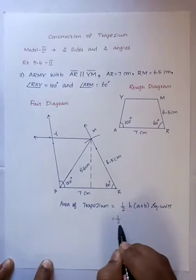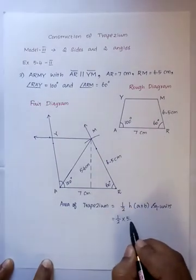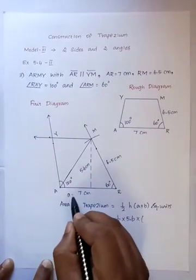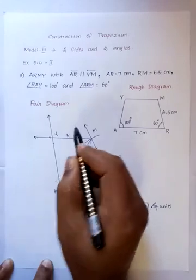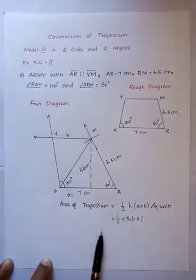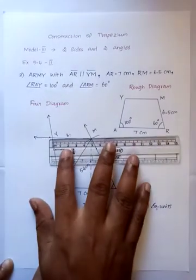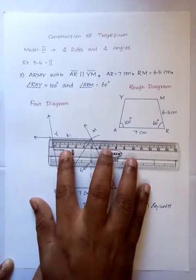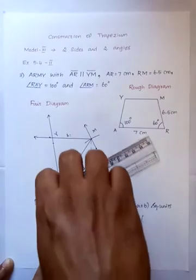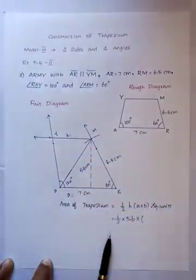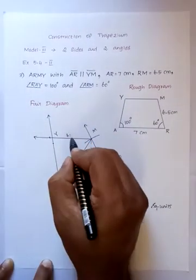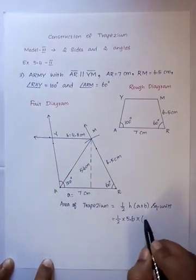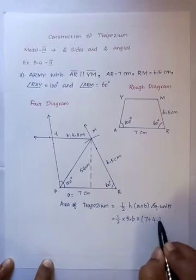Height is 5.6 cm. So one half into height value 5.6, into A plus B. A value is 7 cm. B value is 4.8 cm — these are the parallel sides. So here: 7 plus 4.8 cm.